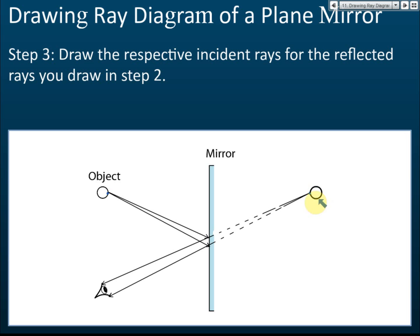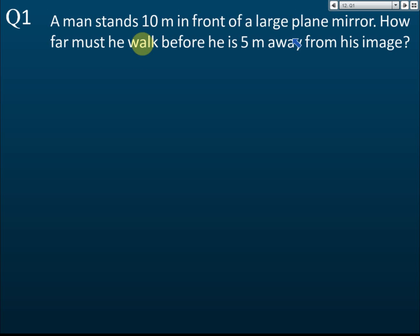To summarize drawing the ray diagram: draw the image first, then choose a point on the image — top, bottom, center, it's up to you. Draw two light rays from that point to the top and bottom of the eye. Use dotted lines behind the mirror. Then draw the incident rays from the object using the corresponding point. Make sure the incident rays come from the matching point on the object.